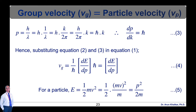For a particle with energy E = ½mv², that is the kinetic energy. Multiplying and dividing by m, we can rearrange this as E = (mv)²/(2m). Since mv is nothing but the momentum p, we get E = p²/(2m). This is equation number 5.